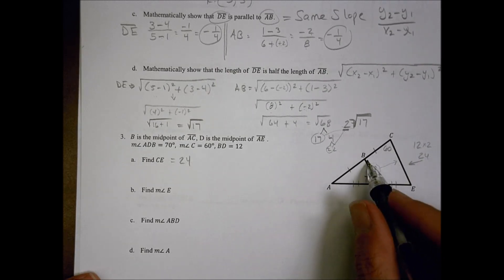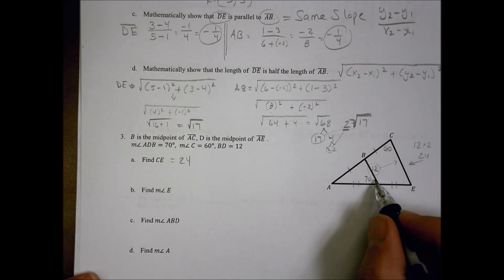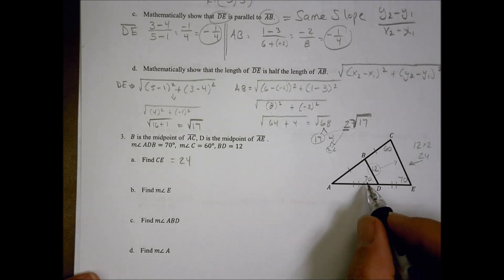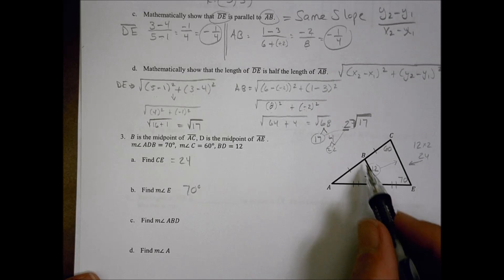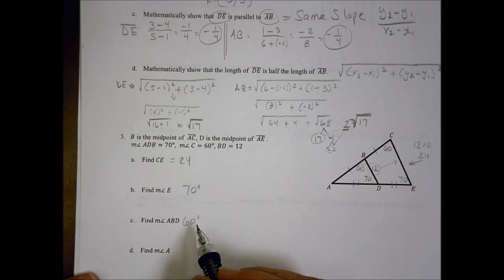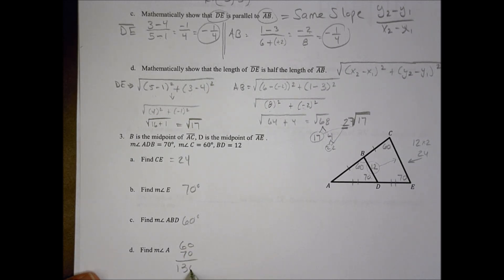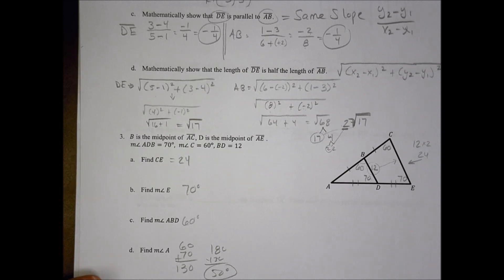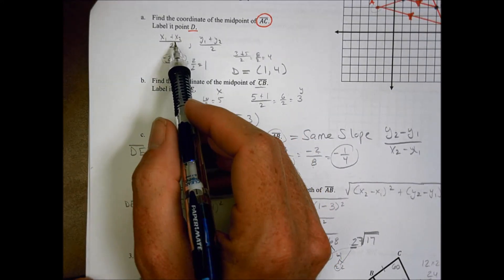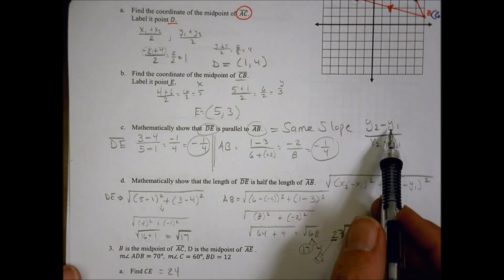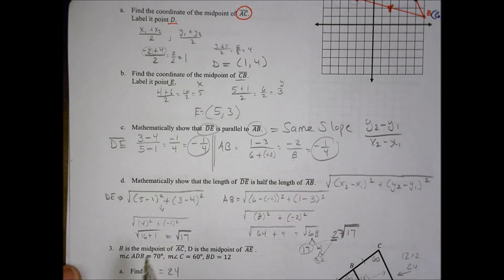Because the mid-segment creates parallel lines, angle E equals 70 degrees — corresponding to the 70-degree angle at ADB. The measurement of angle ABD matches angle C, which is 60 degrees. For angle A, we've used up 60 and 70 degrees — that's 130 — so what remains out of 180 is 50 degrees. Make sure you memorize the midpoint formula, the slope formula (y₂ minus y₁ over x₂ minus x₁), and the distance formula — you'll need all three for the test. Have a great day!